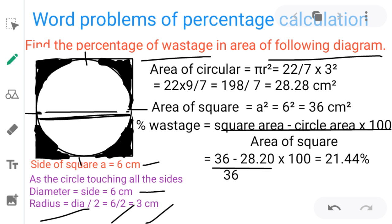What is this? It is asked to find the percentage of wastage. So wastage I have marked in the dark color here, four corners or wastage of square metal. It may be taken as a metal or a wood sheet.